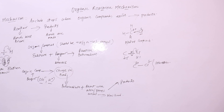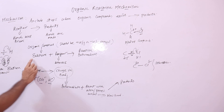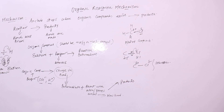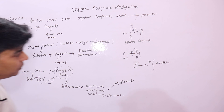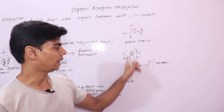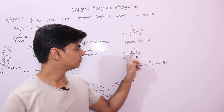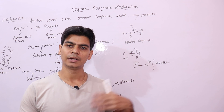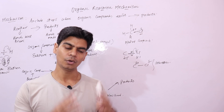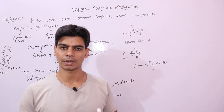Organic reaction mechanism is a sequence of steps depicting the breaking of old bonds in the substrate molecule and formation of new bonds leading to the formation of products through the reaction intermediates. From the next lecture, we will see ways of introducing polarities in organic compounds - how polarities are developed - and we will look into inductive effect, electromeric effect, and mesomeric effect, and how reactions are exactly taking place in organic compounds.